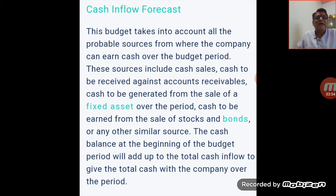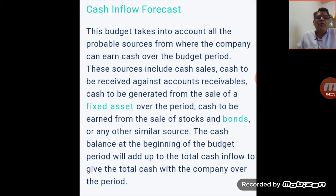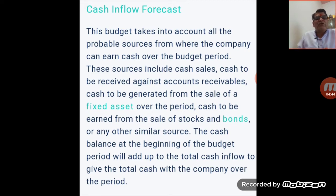This budget takes into account all the probable sources from where the company can earn cash over the budget period. These sources include: cash sales, cash to be received against accounts receivable, cash generated from the sale of fixed assets, cash earned from sales of stocks and bonds, or any other similar sources. The cash balance at the beginning of the budget period is also added to give total cash inflow.